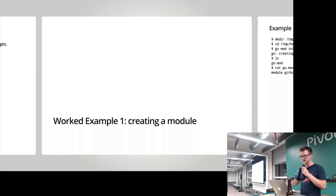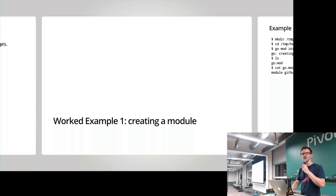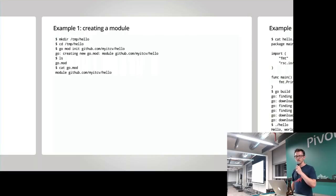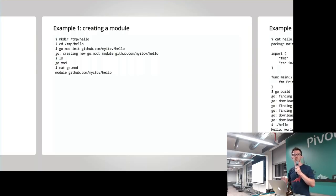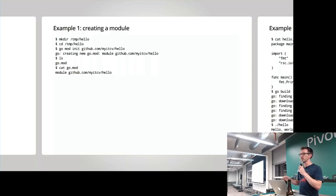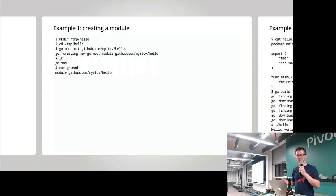Let's get on to a worked example — this is the more exciting bit. I've done a Blue Peter here and the slides were pre-prepared, so I'm sorry about that. The key thing with Go 1.11 is that if you actually want to try out Go Modules, the simplest way is to work outside of your GoPath. Just do it. Hence why I'm working in the temp directory here, creating myself a hello directory and changing into it.